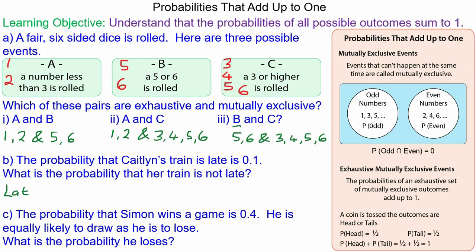The probability that Caitlin is late is 0.1. So the probability that she is late or not late would be mutually exclusive and exhaustive, and that would have a sum of 1.